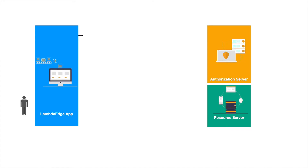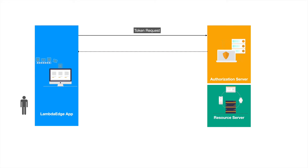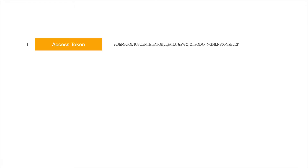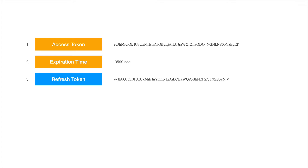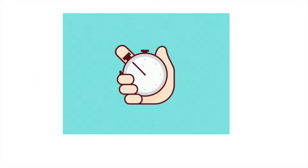The user is directed to an intermediate screen for permissions. Once the user accepts the permission, the application connects with the API provider's authorization server to get the token. Usually the token has four parts: the access token, the expiration time, the refresh token, and the scope.